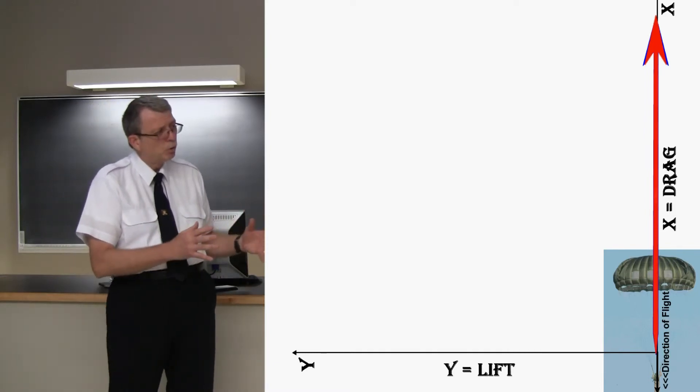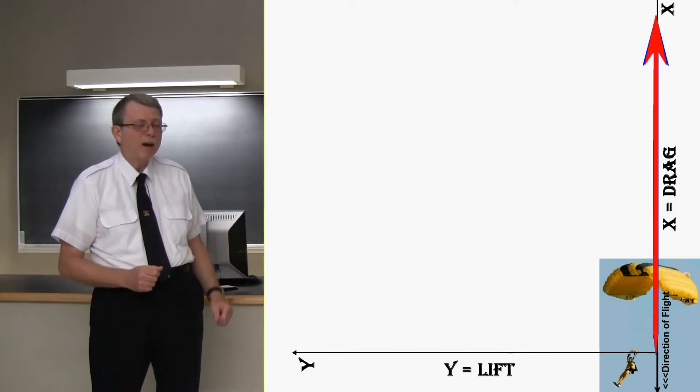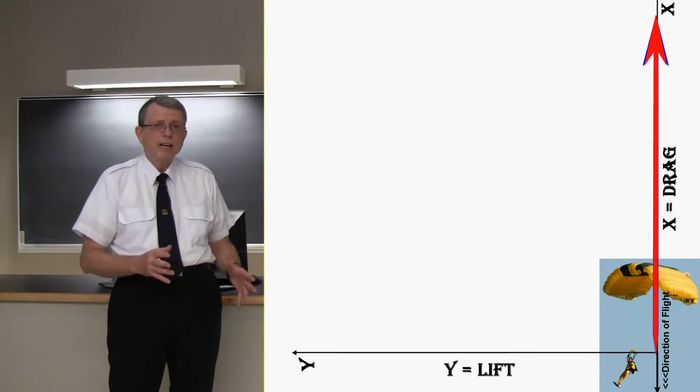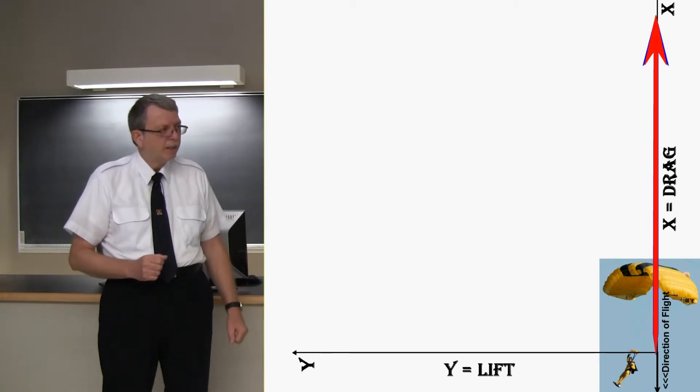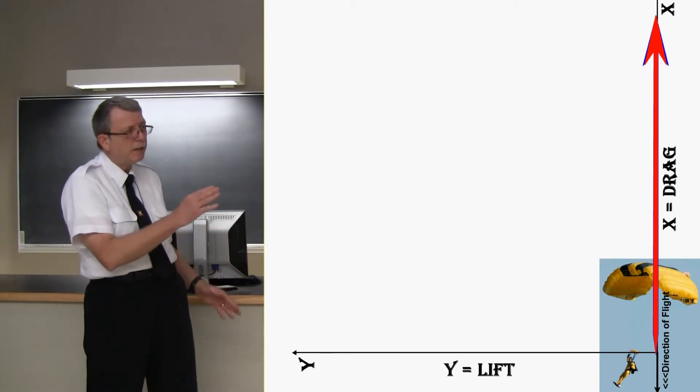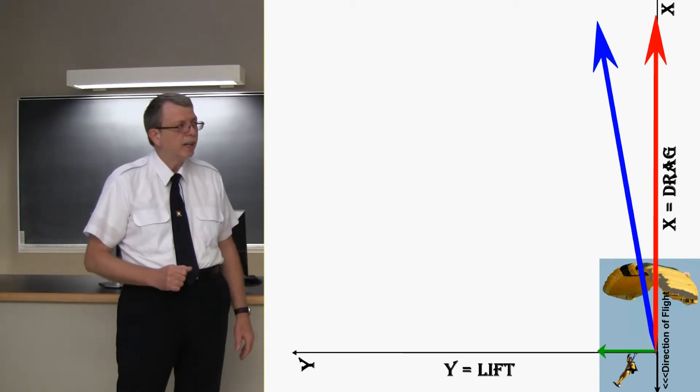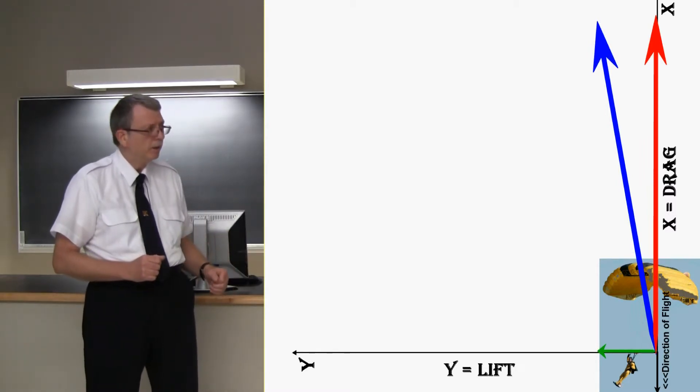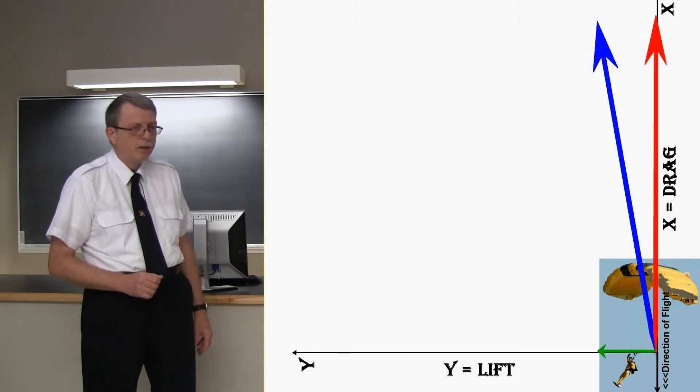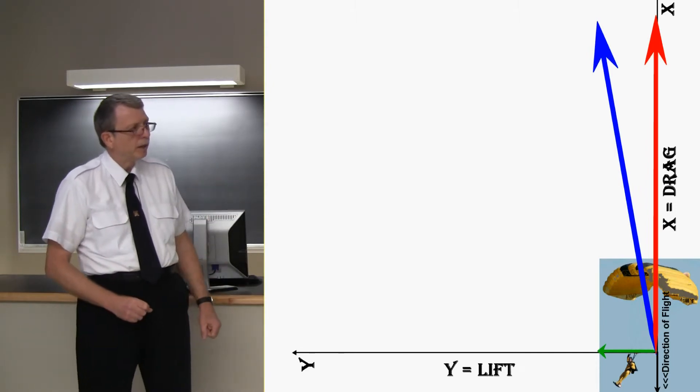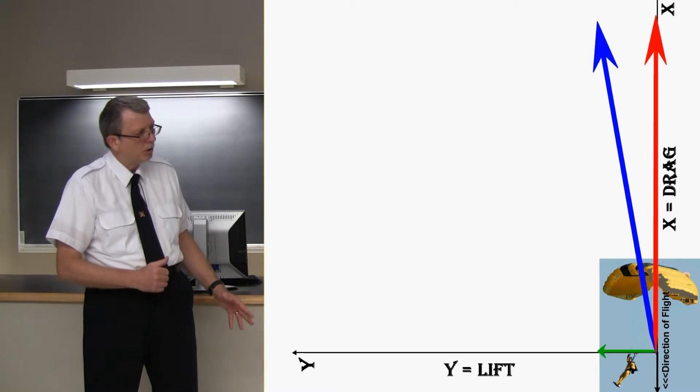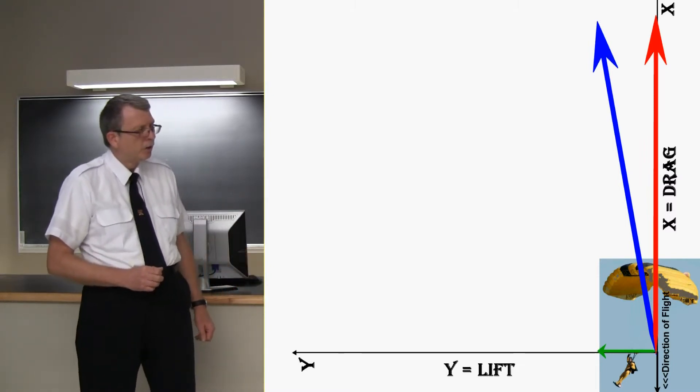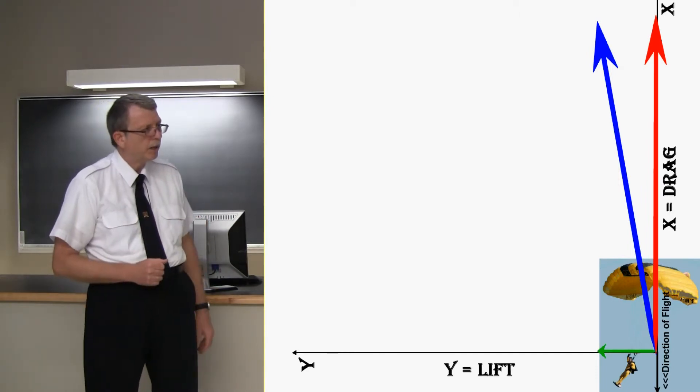But what if it was one of those fancy new parachutes, like that? Now, the aerodynamic force is no longer in the x-axis. The aerodynamic force rotates a little bit out of the x-axis, just like that. Now you can see we've got a problem here. The forces are not exactly balanced. The weight is pulling straight down, but the aerodynamic force is pulling up and on an angle to the left there. So it's going to make the parachute move in this direction.